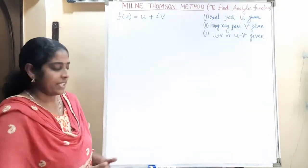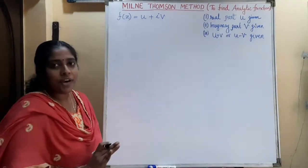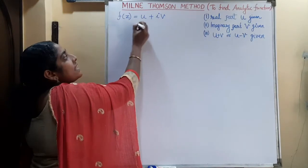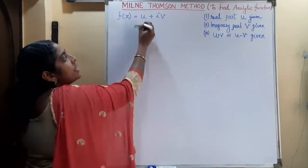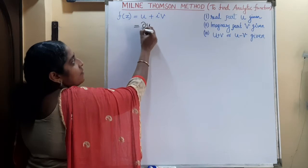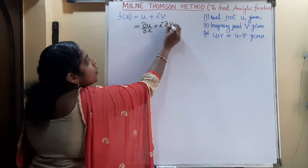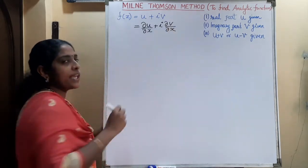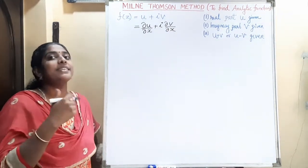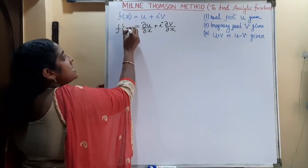How do we apply this method? First, consider the analytic function U plus iV. We take the partial derivative of this function with respect to X, giving us ∂U/∂X plus i·∂V/∂X. This is denoted as F'(z).